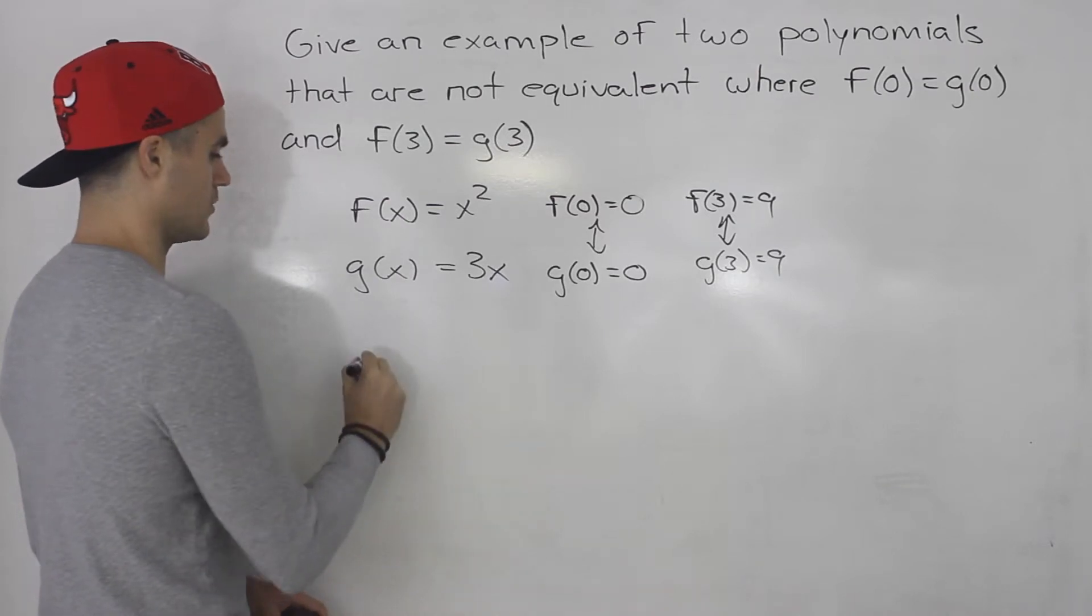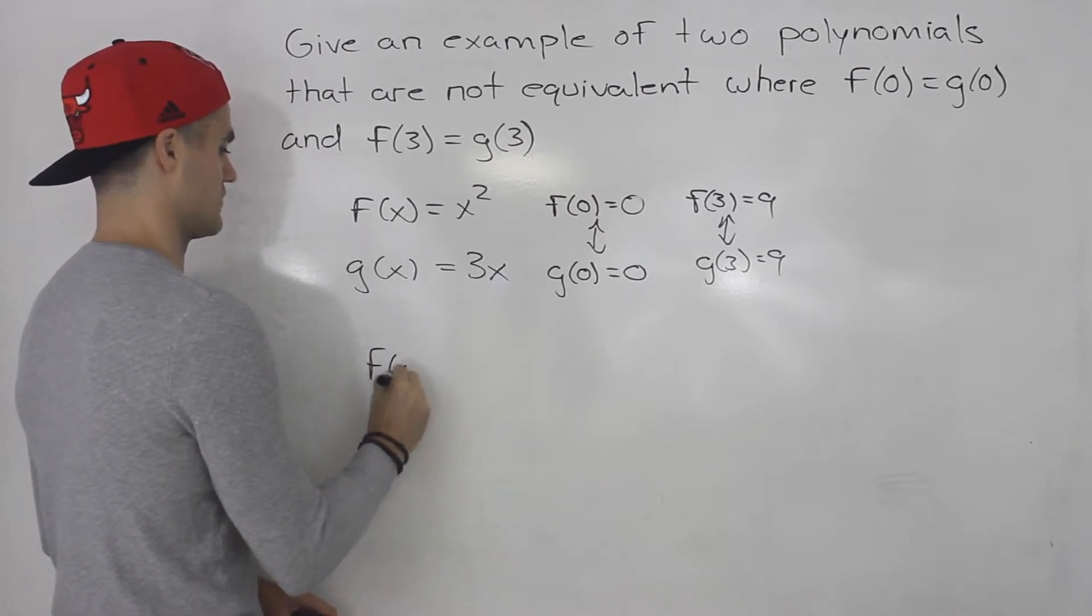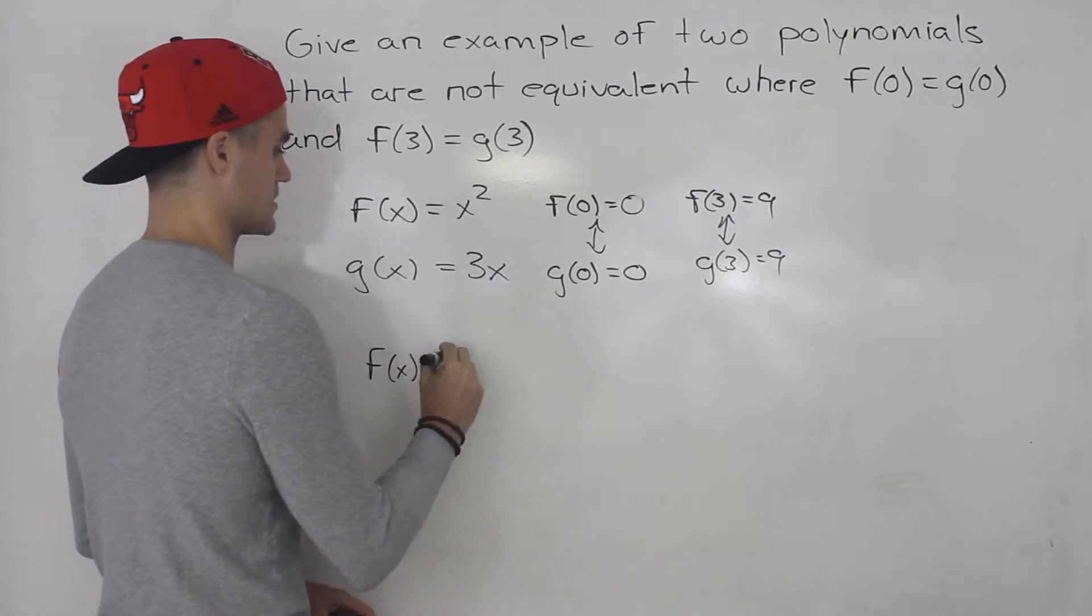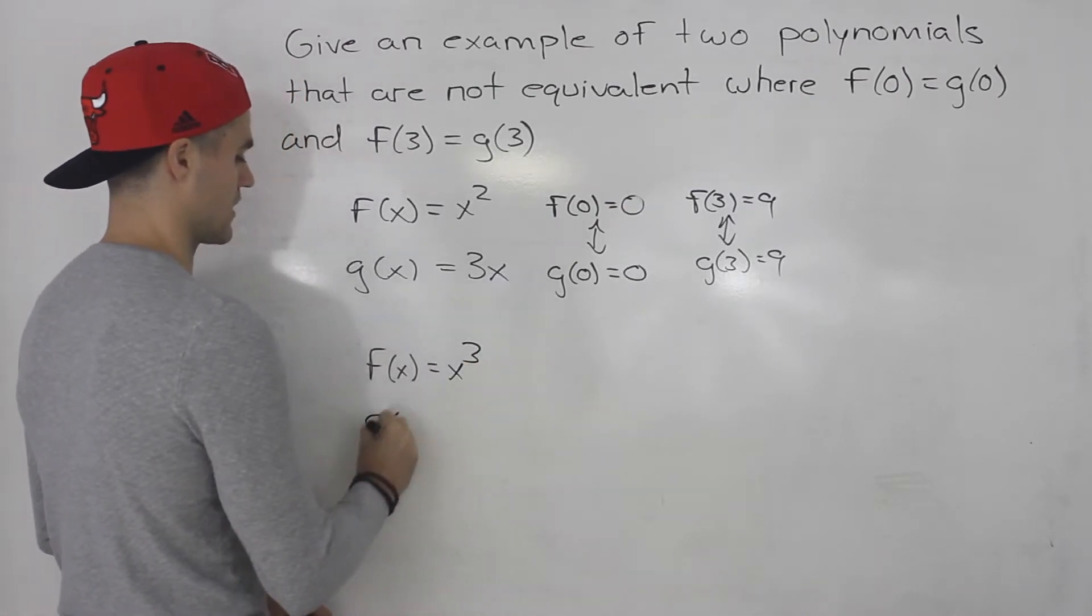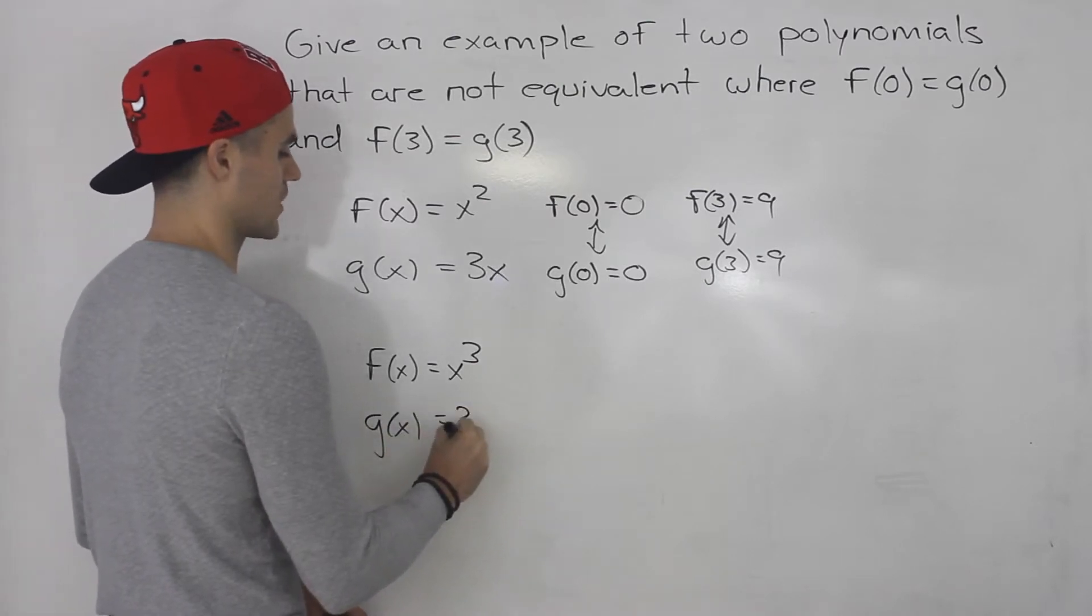So that's an example. Perhaps another example is if you have f of x is x cubed and then g of x would be 3x squared.